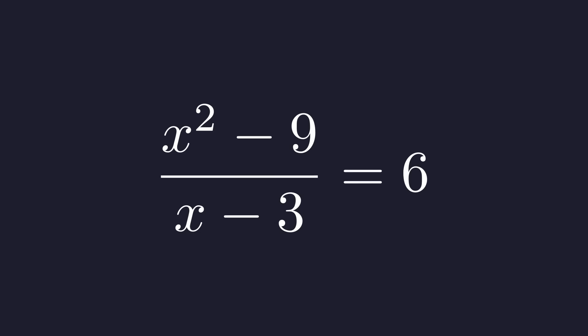The numerator is x² - 9. This is actually one of those classic patterns, a difference of squares. To make use of this, we can think of 9 as 3².